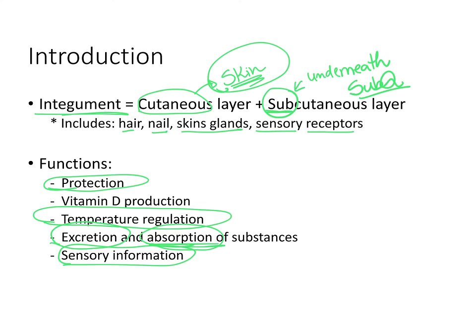Lastly, but not less important, the integument is involved with the production of vitamin D. Vitamin D starts being produced at the skin, but only when we are exposed to sunlight. This form of vitamin D then goes to the kidneys and becomes a very active form. If we are not exposed to sunlight, we cannot produce this precursor form of vitamin D.